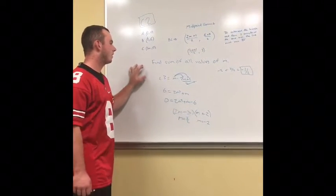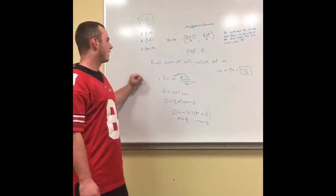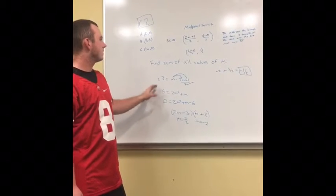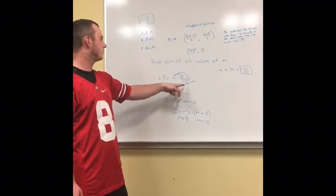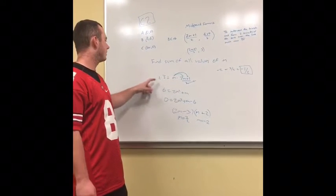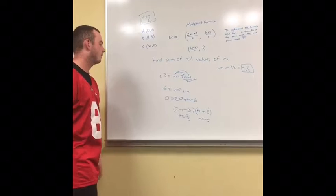So, then you have to find all values of M that can make this possible. So, I set M times what would be the x value, which is (2M plus 1) divided by 2, and I set that equal to 3 because that would be our y value.